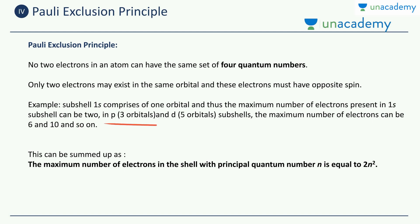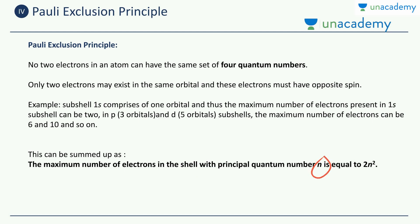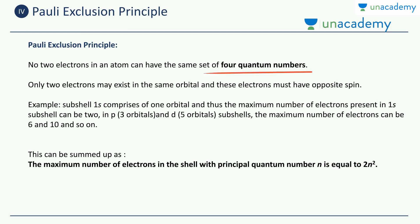For p orbitals, there are three orbitals in the p subshell, and each can take two electrons, so the maximum is six electrons in p. The d subshell has five orbitals, so the maximum is ten electrons. This can be summed up as: the maximum number of electrons in a shell with principal quantum number n is equal to 2n².